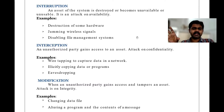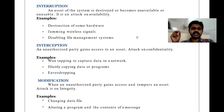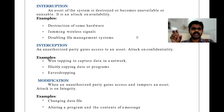A system is available, and destroying that system as well as making it unavailable or unusable is nothing but interruption. This is the major threat or attack on any particular system or network. For example, destruction of some hardware — if we destroy any hardware, it comes under interruption.